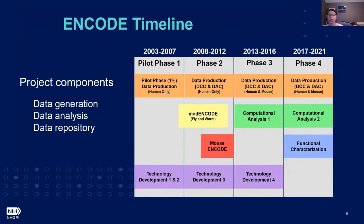I want to get a little bit into the ENCODE timeline and wanted to mention that there are really three components to this project: data generation, analysis, and the development of the data repository. ENCODE was started in 2003 and it started as a pilot with the focus on mapping 1% of the human genome.